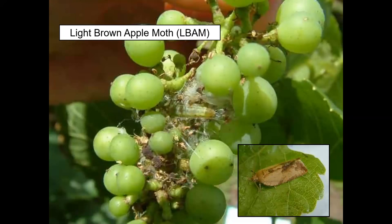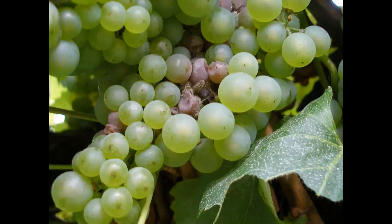The moth itself doesn't cause the problem; it's the larval stage. The moth lays eggs in secluded places, such as the interior of a bunch. The eggs hatch out, the caterpillars feed on the interior of the bunch, and the damage they cause becomes a point of infection for Botrytis. Generally we don't see it at this stage — it's late in the season with post-veraison berries. This is a typical scenario with Chardonnay grapes, where Botrytis develops deep within a tightly packed cluster with splitting berries.